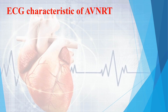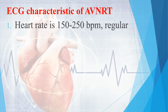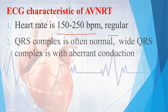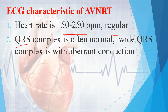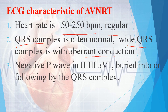The ECG characteristics of Atrioventricular Node Re-entrant Tachycardia: heart rate is between 150 to 250 beats per minute and the rhythm is regular. The QRS complex is often normal; sometimes a wide QRS complex occurs with aberrant conduction. In ECG leads 2, 3, and AVF, a negative P wave can be seen — buried in or followed by the QRS complex.